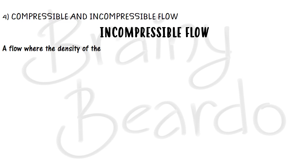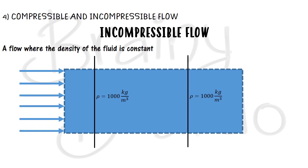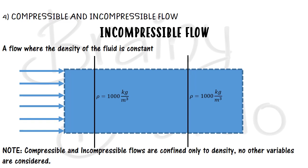Incompressible flow is a flow where the density remains constant — it does not change. At the first section the density is 1000 kg/m³, and in the second section it is still 1000 kg/m³ unchanged. Such a flow is called incompressible flow.